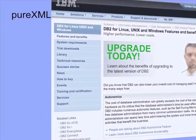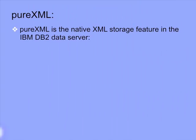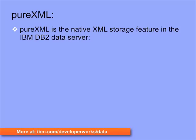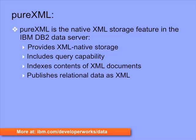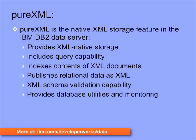PureXML, part of IBM DB2, is an example of a technology that uses query languages, storage and indexing technologies, and other features to support XML data. DB2 natively stores and processes XML data in its inherent hierarchical structure, as opposed to treating XML data as plain text or converting it into relational format. It provides query capability, indexing inside of XML documents, publishing relational data as XML, XML schema validation capability, and database utilities and monitoring features.